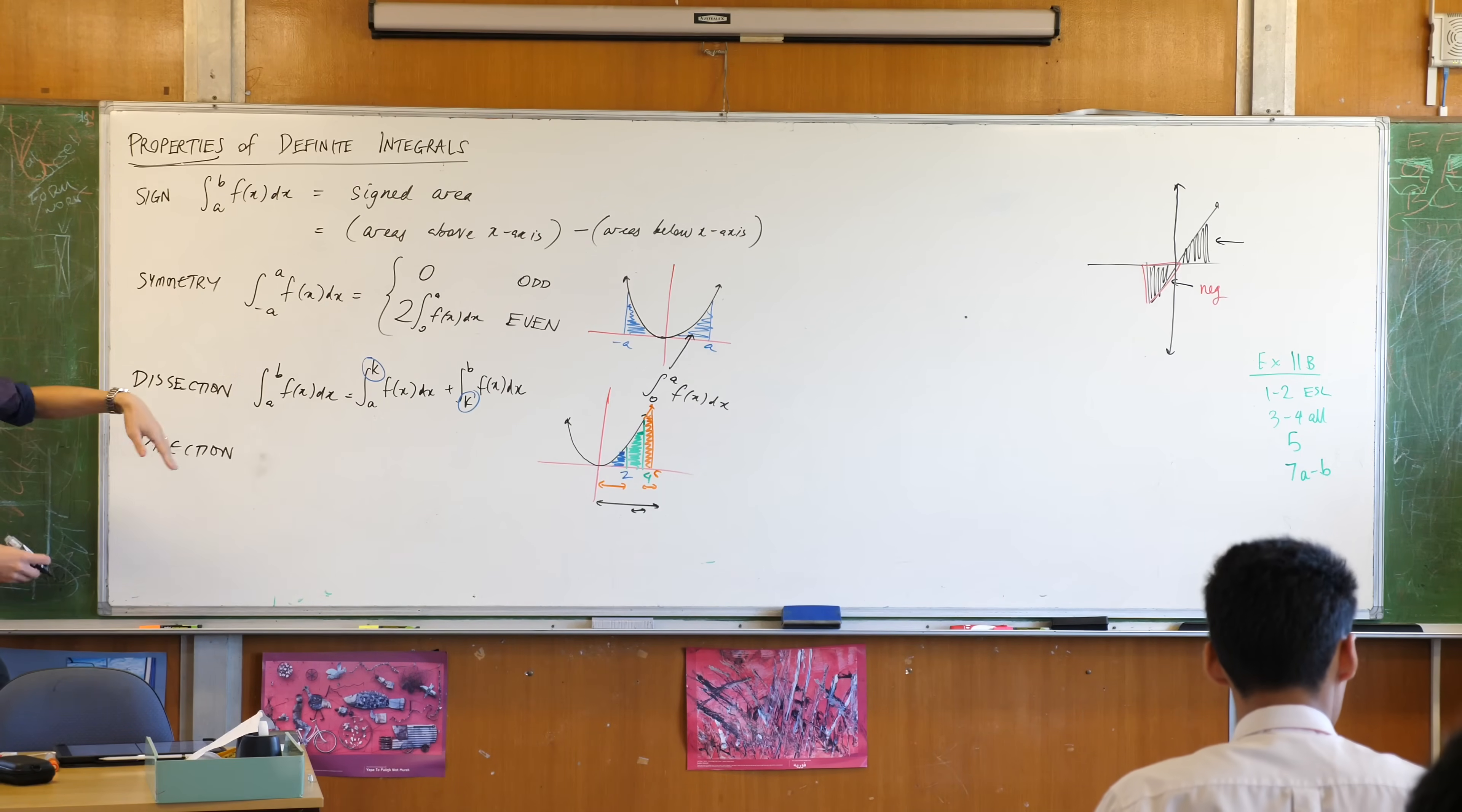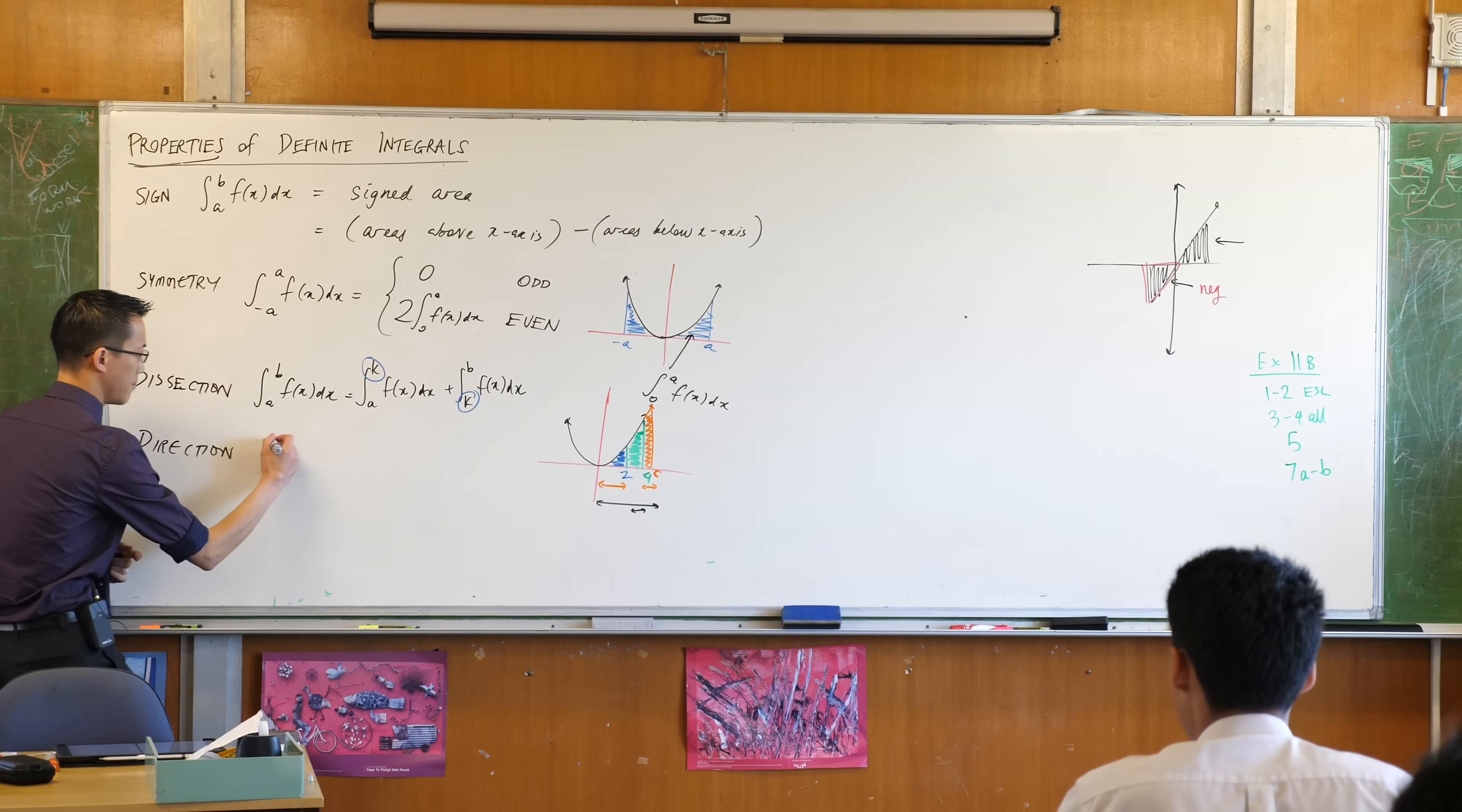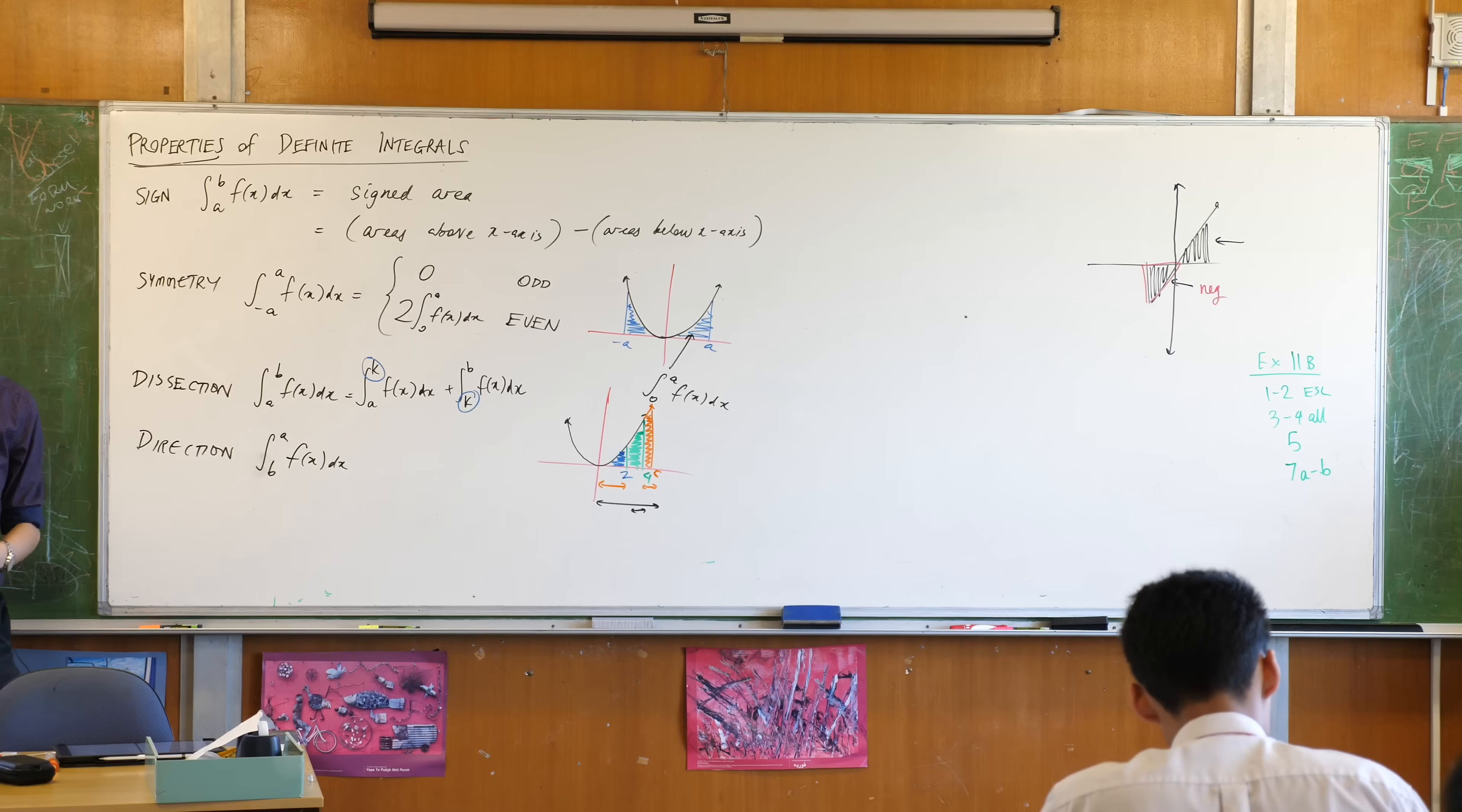So all along, this whole time, we sort of assumed that this number is smaller than this number. Does that make sense? Like you go from zero to four, or five to eight, or something like that. So you're progressing from left to right. What would happen if I went in the opposite direction? What would happen if I integrated in the reverse direction?